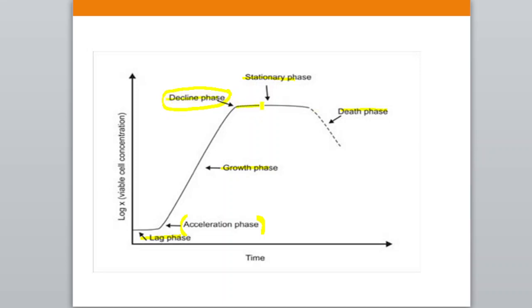After that, for a period of time the growth of microorganism remains stationary — this phase is known as the stationary phase. After that, slowly the number of microorganisms tend to die. This phase is known as the death phase. In the lag phase, the microorganism adapts to the environment in which they are present or transferred — they will acclimatize themselves. After that, the acceleration phase will happen.